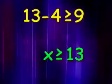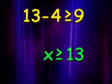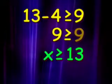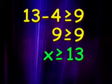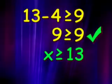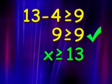To check our solution, we can take 13, substitute it into the original inequality, and check to see if it gives us a true statement. 13 minus 4 is 9. 9 is equal to 9, so it is greater than or equal to 9. So that part of our solution is correct.